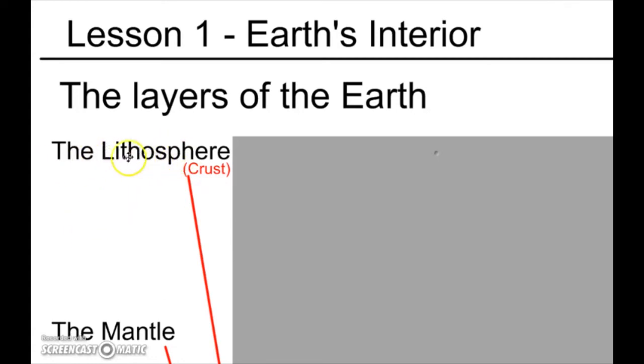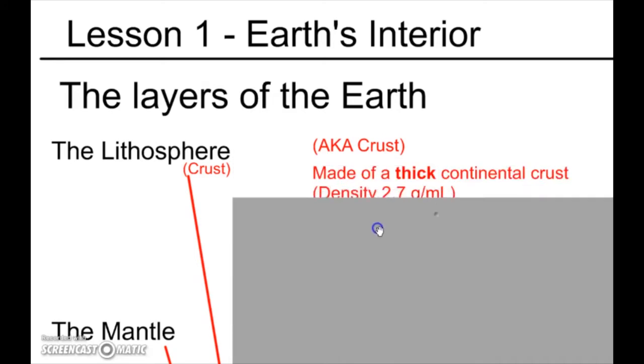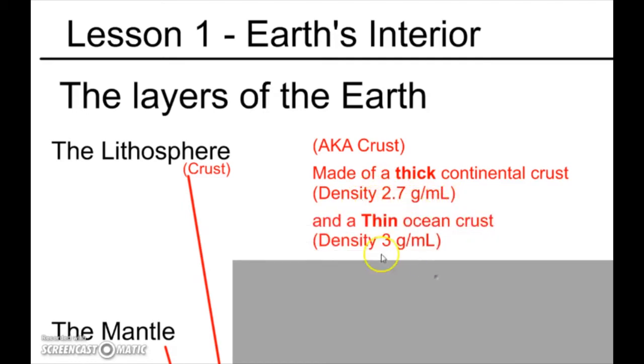Now this first layer we'll talk about is called the lithosphere. This is what we're going to call the crust of the Earth. It's made of a thick continental crust, which has a density of 2.7 grams per milliliter, and a thin oceanic crust, which has a higher density of 3 grams per milliliter.